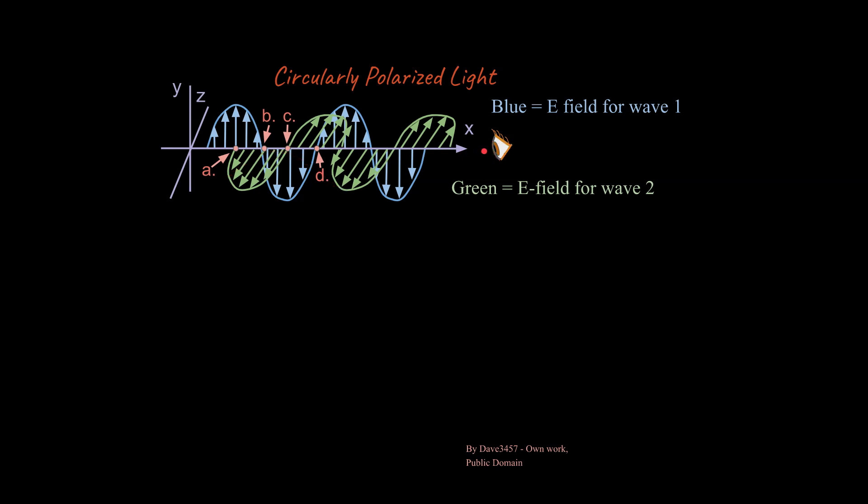Let's think about what this observer would see at A in terms of the vectors, the blue and the green electric field vectors that you would see. Remember, these are two electric fields. They have been phase shifted or offset by 90 degrees.